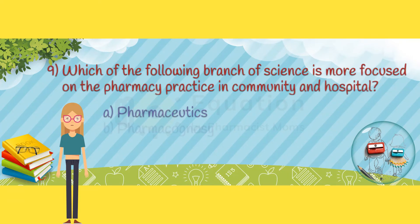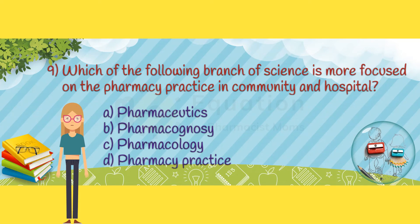Question 9. Which of the following branch of science is more focused on the pharmacy practice in community and hospital? Option A: pharmaceutics. Option B: pharmacognosy. Option C: pharmacology. Option D: pharmacy practice.